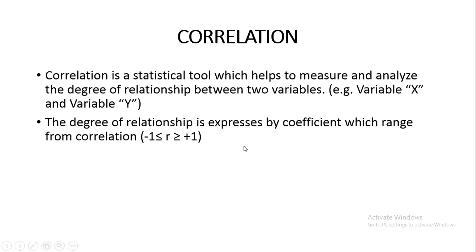The answer or the relationship between two variables has a fixed range from minus one to plus one. It can never be less than minus one and it can never be more than plus one. So the range of correlation can be either minus one, that is perfectly negative correlation, or there can be positive correlation, or there can be zero correlation.